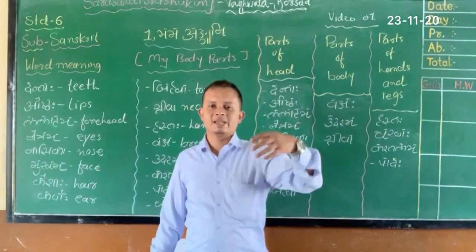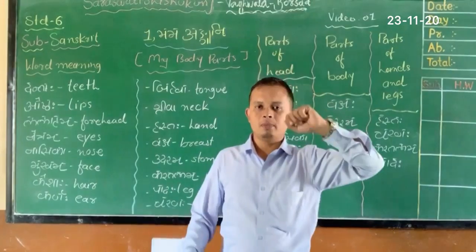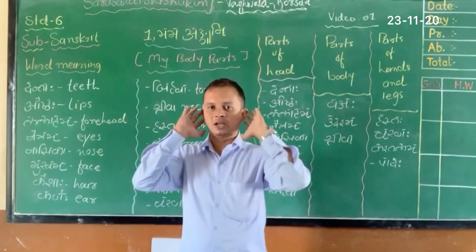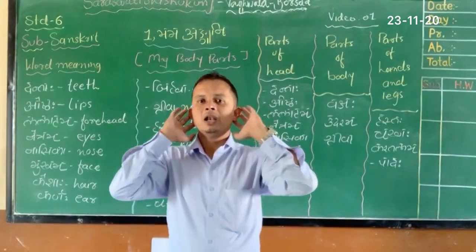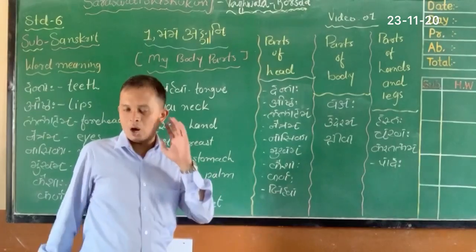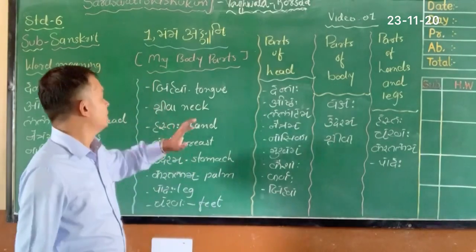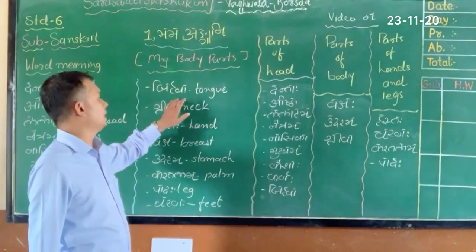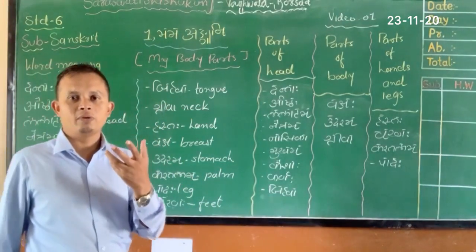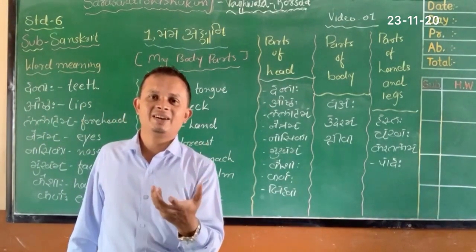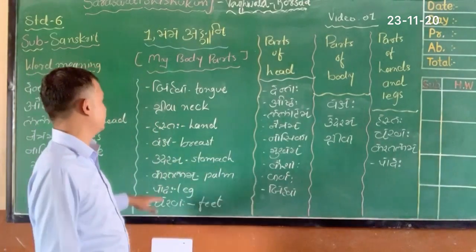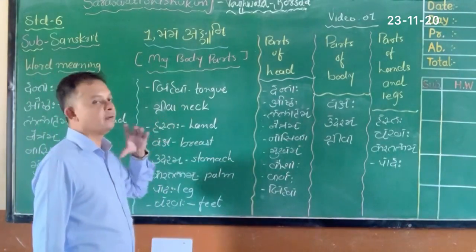Kesa means hair — we have to take care of our hair. Karn or Karnal means ear — it is used for listening. Griva means our neck — this is our part of the neck.